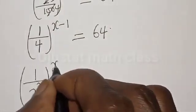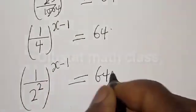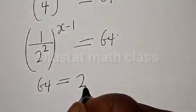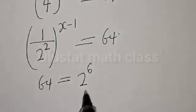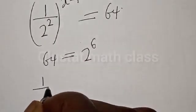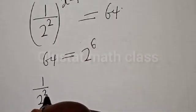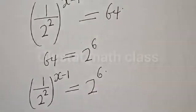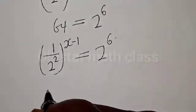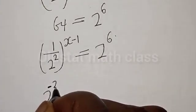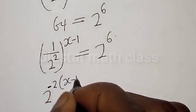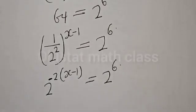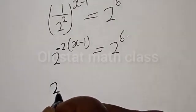So we have 1 over 4, raised to power x minus 1, is equal to 64. And 64 is the same as 2 raised to power 6. Then we have 1 divided by 2 squared, raised to power x minus 1, is equal to 2 raised to power 6. We can write this as 2 raised to power negative 2 into x minus 1, is equal to 2 raised to power 6.